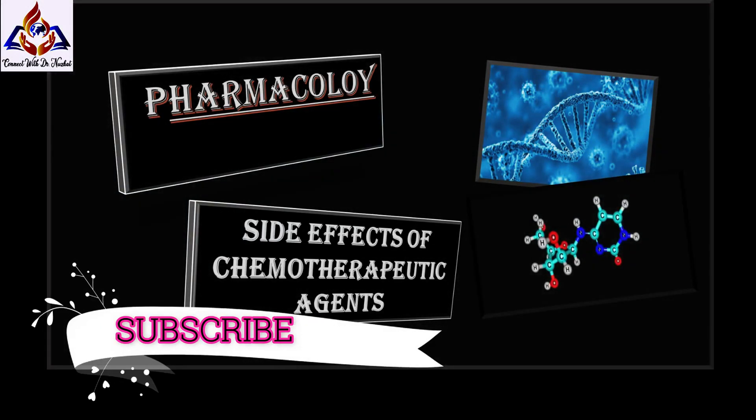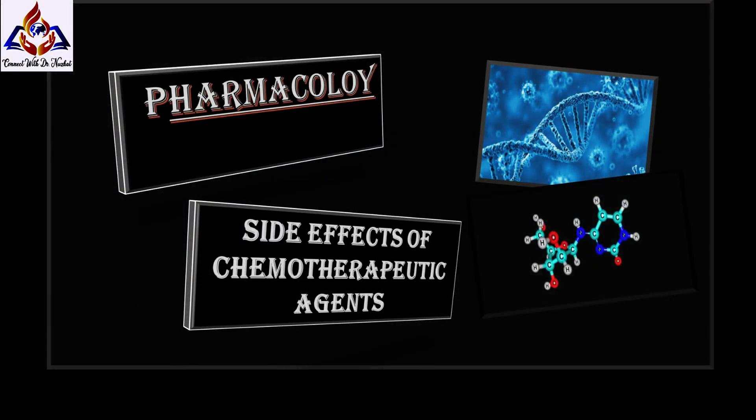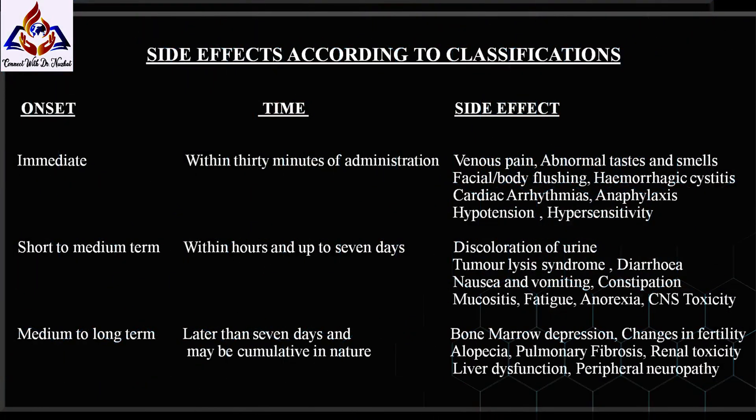Our topic is side effects associated with chemotherapy agents. In this slide, side effects on the basis of classification — when onset of drug action is immediate and the time period is within 30 minutes after administration, the expected side effects are venous pain, abnormal taste and smells, facial or body flushing, hemorrhagic cystitis, cardiac arrhythmias, anaphylaxis, hypertension, and hypersensitivity.